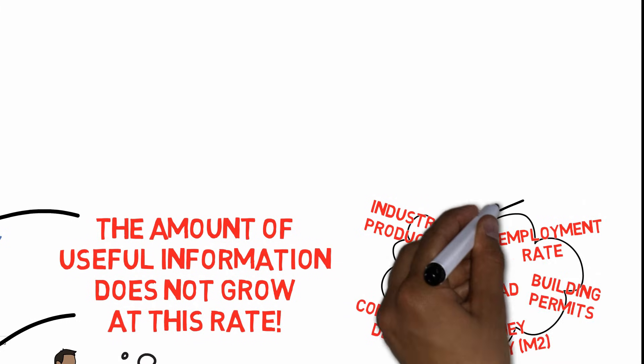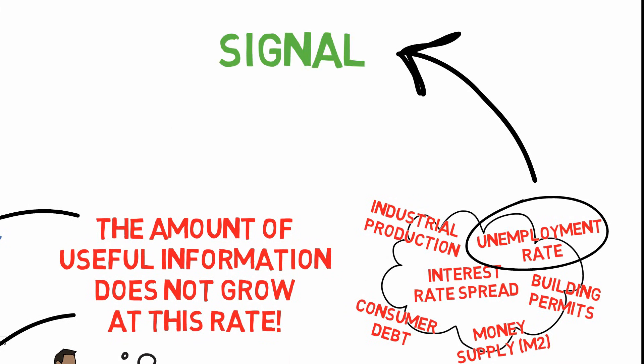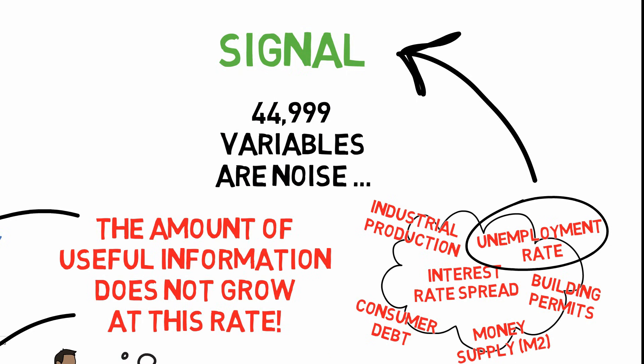Let's pretend, for instance, that unemployment rate is the signal. It is what can help us predict how the economy will do for the next five years. Then all the other 44,999 economic indicators are noise. They are just distracting us from realizing that it's only unemployment rate that we should be focusing on.